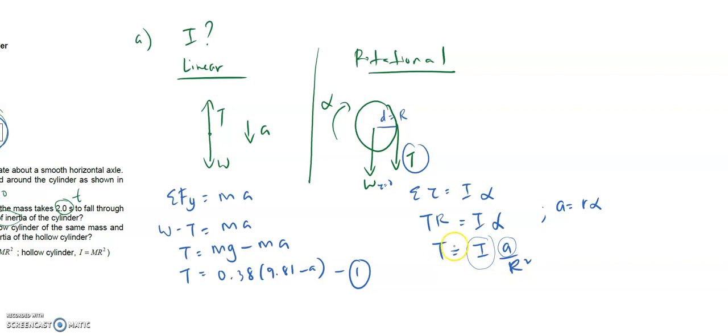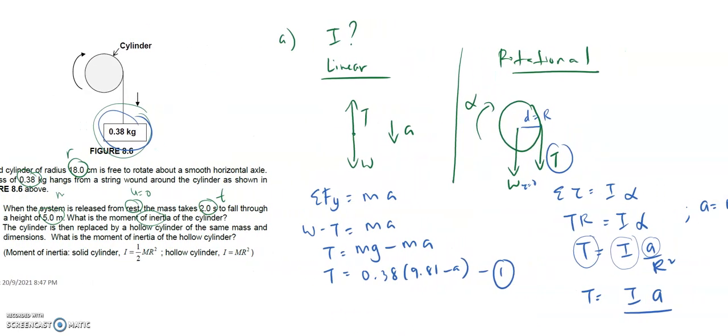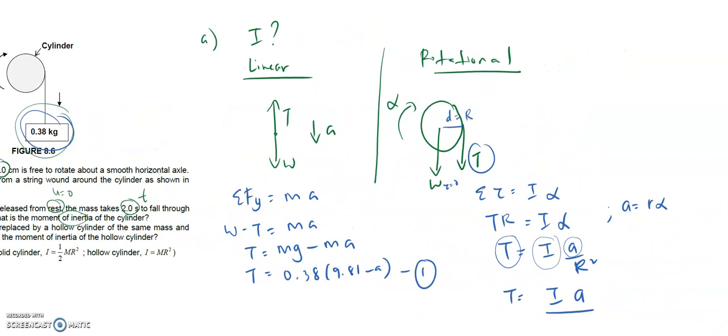So I equals Ia over r squared. One of our problems here: we don't have I, we don't have a. We have r but we don't have T. So there are three unknowns. When we have three unknowns, meaning we need three equations.